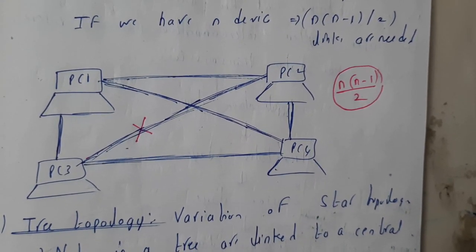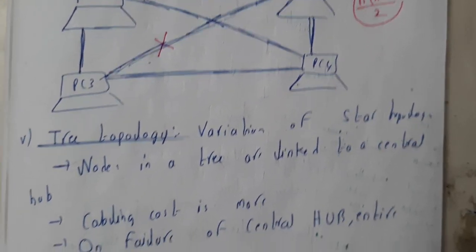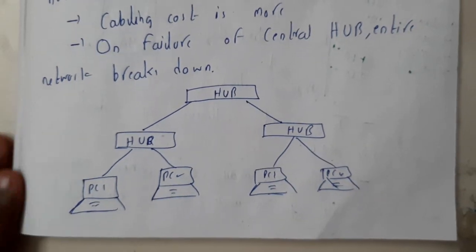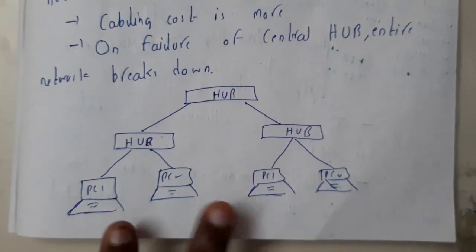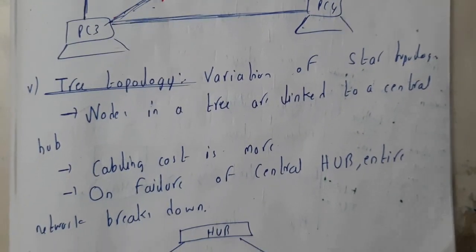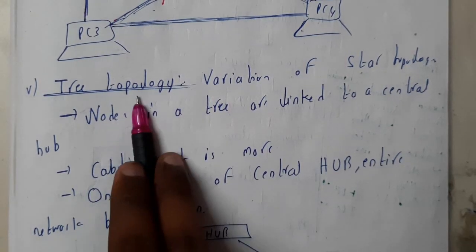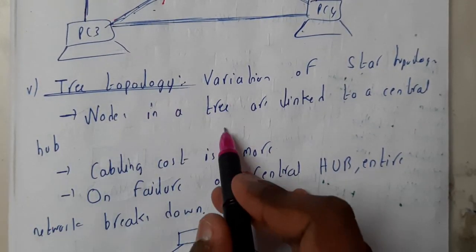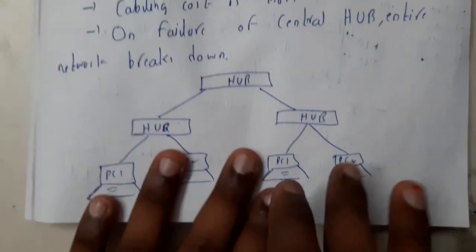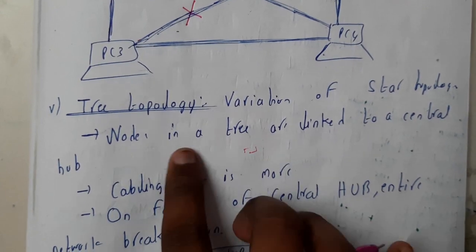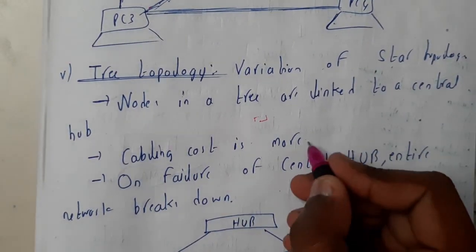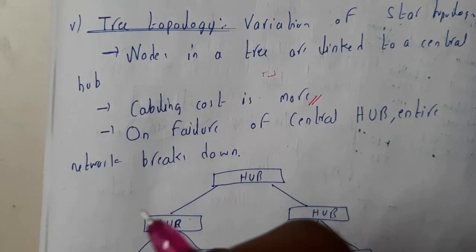Now let us go through tree topology. From the name you can tell it will look like a tree — the root has children, and each child can have further children. For example, a main hub has two sub-hubs, and each sub-hub has devices connected to it. Tree topology is a variation of star topology. Instead of a single central hub, it has a hierarchical tree structure from top to bottom. Nodes are linked to a central hub, but cabling cost is high, and failure of the central hub causes the entire system to collapse.